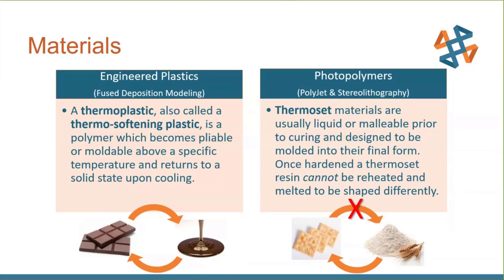Photopolymer is a little different — it's a thermoset material. It starts out as a liquid, and as a laser or ultraviolet light hits it, it hardens. It's like a two-part epoxy where the light is the catalyst. Once hardened, it cannot be reheated or remelted back to a different shape. Like making a cracker — once you've baked it, you can't separate the flour back out. Those are the differences between the materials, and there are advantages to each.